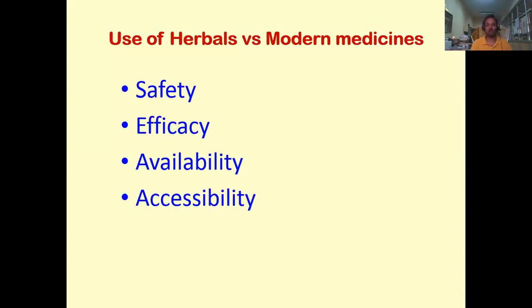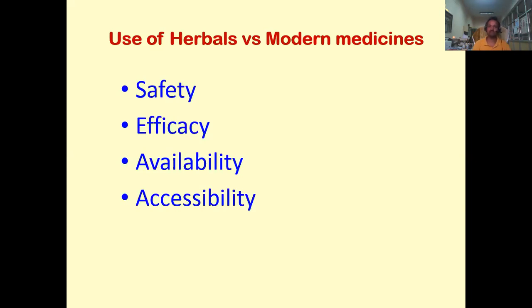Why are herbals so popular? Although we have many modern medicines, there are four features that make herbals so widely used. The first and foremost is safety — modern medicines often cause side effects; for example, treating a heart disease may affect the kidneys or brain. So people are turning to the use of herbs, which are considered safe and free from such side effects.